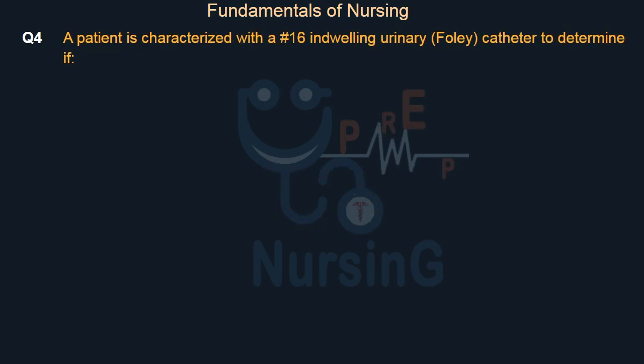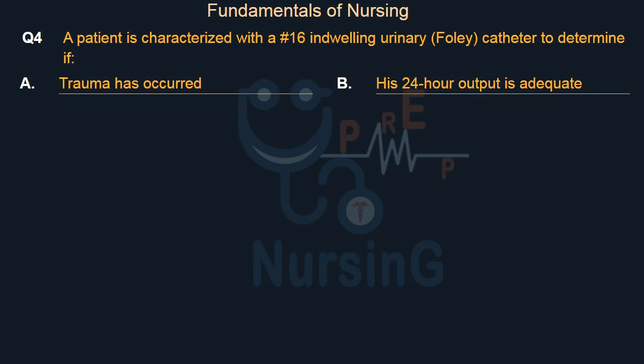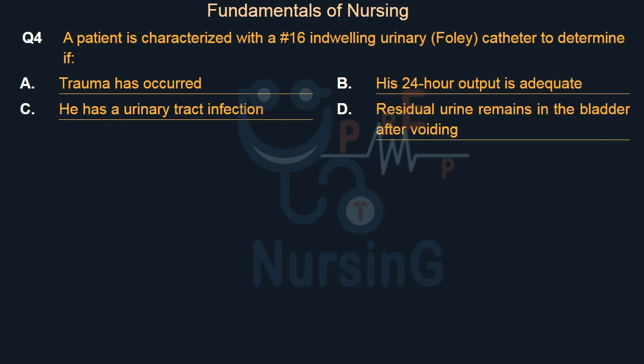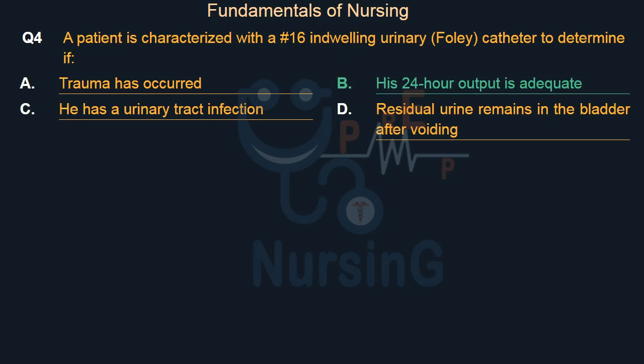A patient is catheterized with a number 16 indwelling urinary Foley catheter. To determine what? Option A: Whether trauma has occurred. Option B: Whether his 24-hour output is adequate. Option C: Whether he has a urinary tract infection. Option D: Whether residual urine remains in the bladder after voiding. The right answer is Option B: his 24-hour output is adequate.